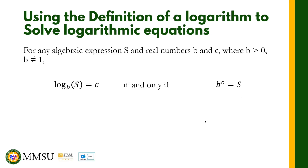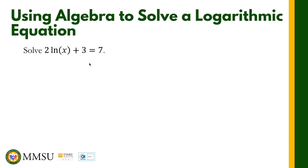Let us answer problems using this definition. We are given 2 ln of (x + 3) equals 7. We transpose the +3 to the right side of the equation: 2 ln(x) equals 7 minus 3, and simplifying we have 2 ln(x) equals 4.